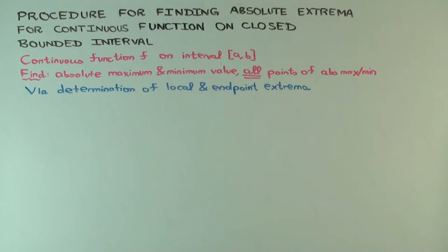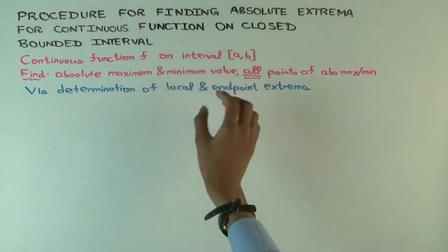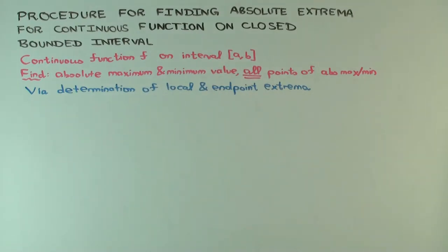The question is how do you find it? We want to find the absolute maximum value — there's a single absolute maximum value — and the absolute minimum value. We also want all the points in the domain where these values are attained: all points where the absolute maximum is attained and all points where the absolute minimum is attained.